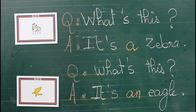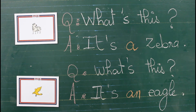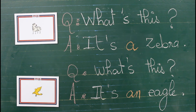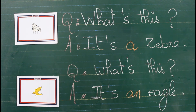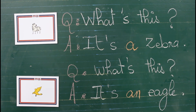For singular words that start with a vowel like A, E, I, O, or U, we use 'an'. An eagle. An elephant. For singular words that start with a consonant, we use 'a'. A zebra. A bat. A tiger. Okay? Very good.